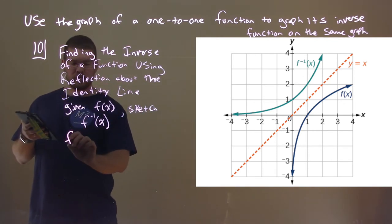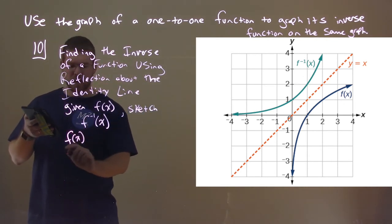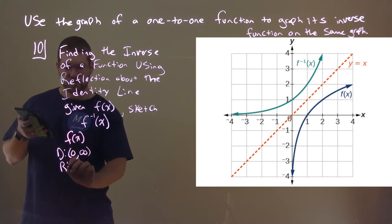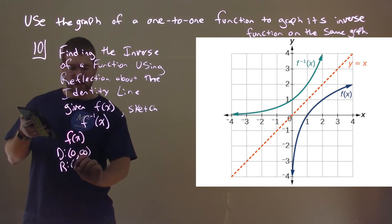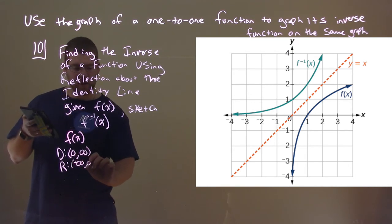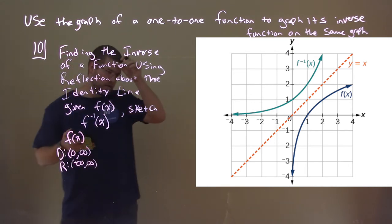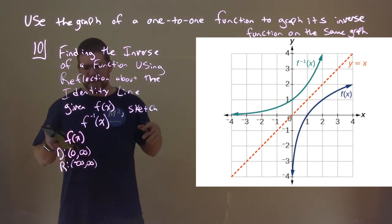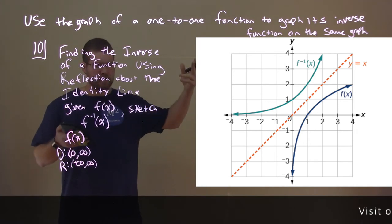Well, f of x, what did it have? It had a domain from, not including zero to infinity. But its range was from negative infinity to positive infinity. So notice the range there. So the domain was zero to infinity for f of x in blue, or dark blue, and the range is from negative infinity to positive infinity.